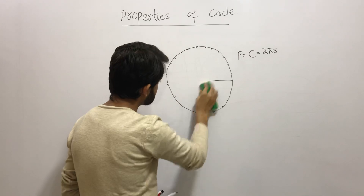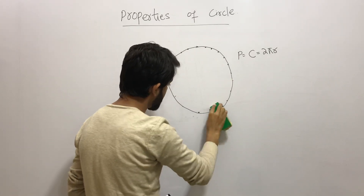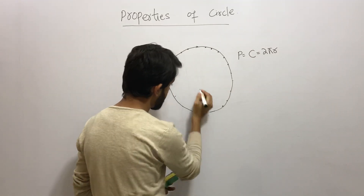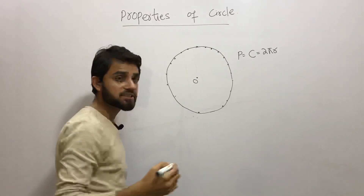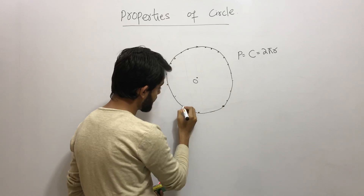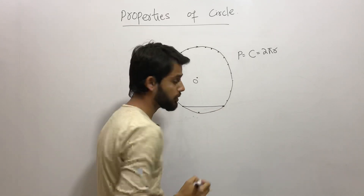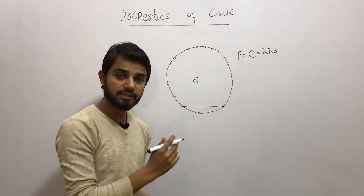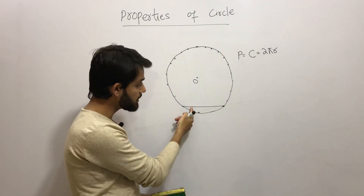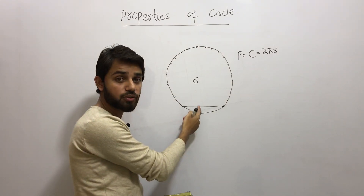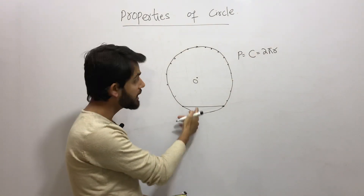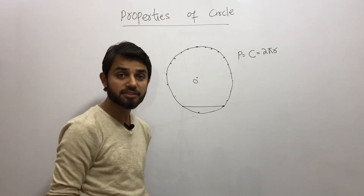On this circle I am going to take a line segment that touches the circle at two points. The line segment that touches the circle at two points is called a chord of a circle. This chord divides the circle into two parts — the smaller part is called the minor segment and the larger part is called the major segment.